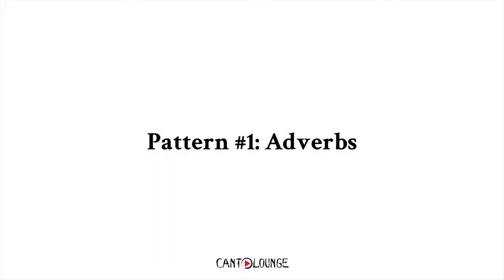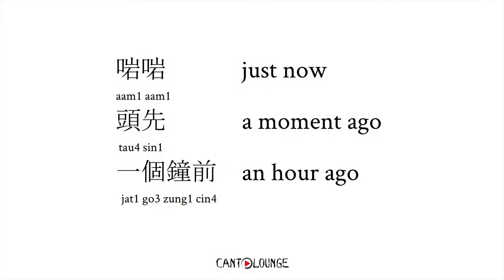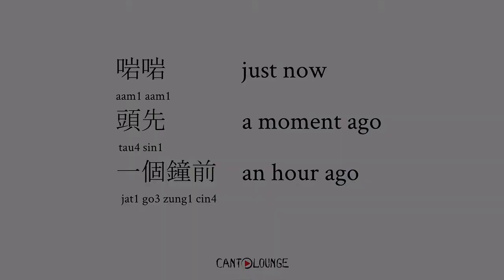Number one would be through adverbs. In this case, you don't have to add anything except for the adverbs that show that you're talking about the past. For example, you might have stuff like 剛剛, or 剛才, or 一小時前 — meaning just now, a moment ago, and an hour ago. So you just add them in the appropriate places.